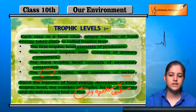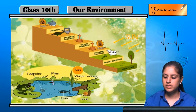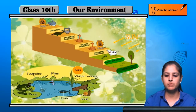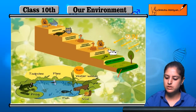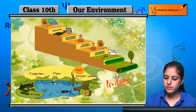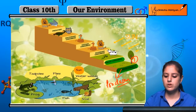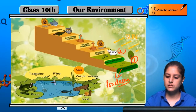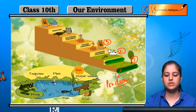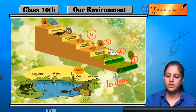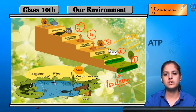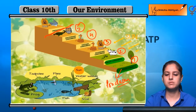Let us see an example. These are the green plants — they are producers. This is the first level. Those that come and feed on them are the primary consumers at the second level. Then the third level is secondary consumers, the fourth level is tertiary consumers, and the fifth level is the apex consumer. This is the maximum limit.